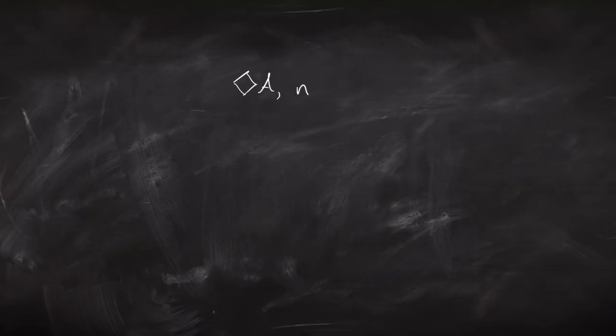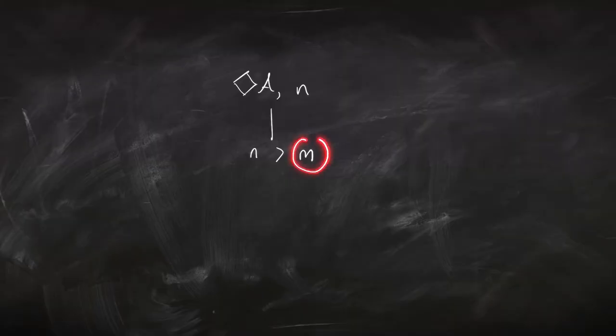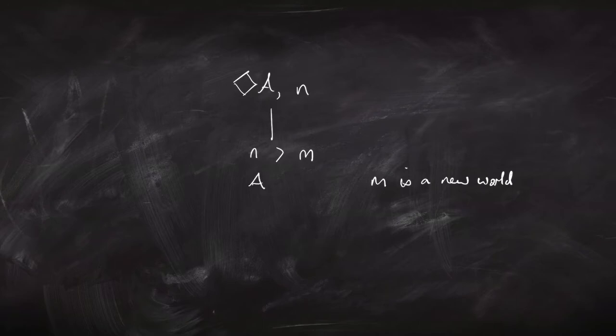Now we're going to add four new rules to deal with the box and the diamond. Let me tell you about the diamond rule first. Diamond A means A is possible — we think of that as meaning there is an accessible possible world where A is true. If we start off at world N, like world three, we say there's another world accessible from that one, say world four, and that's accessible from world three. This new world has to be brand new — a number that hasn't cropped up in that branch yet. Then we say that A is true at that world.